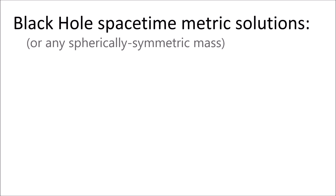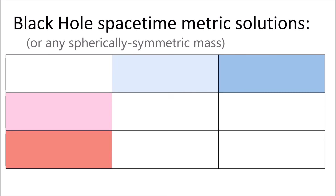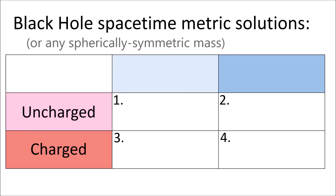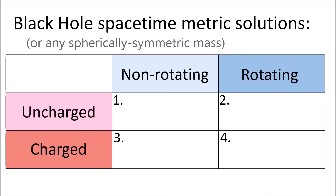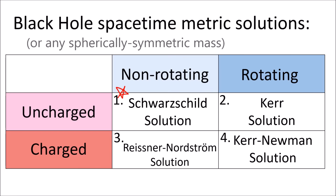When it comes to black hole solutions, we can categorize them for electrically charged and uncharged black holes, and rotating and non-rotating black holes. We're going to look at the uncharged non-rotating case, called the Schwarzschild solution.